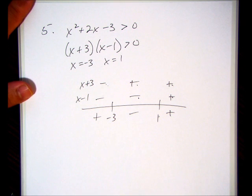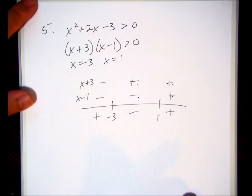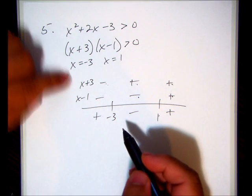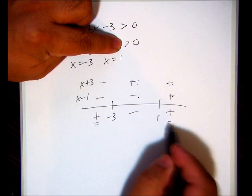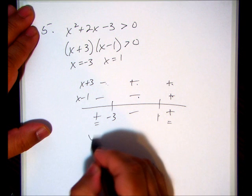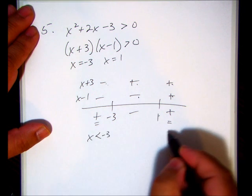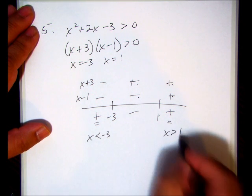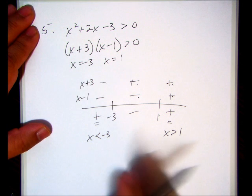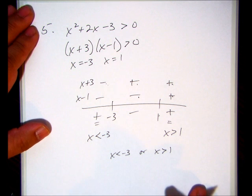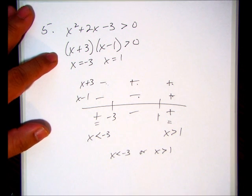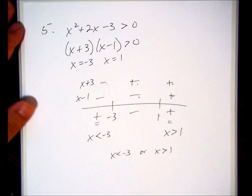A student pointed out that for our problems it's always going to look like this. Well that's true, but it doesn't hurt to get in the habit of making a sign chart - you will be using it later on. This problem is looking for greater than zero, so we're looking for positive regions. My positive region is x < -3 and x > 1. To combine two disjoint sets we use the word 'or', so my answer to number 5 is x < -3 or x > 1.